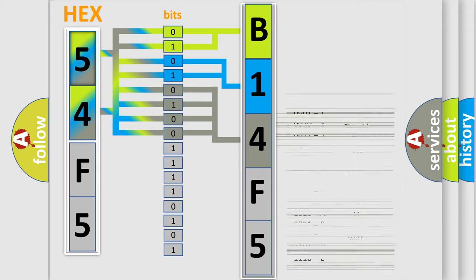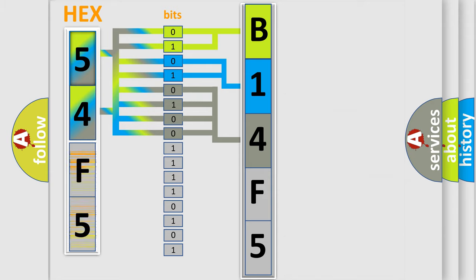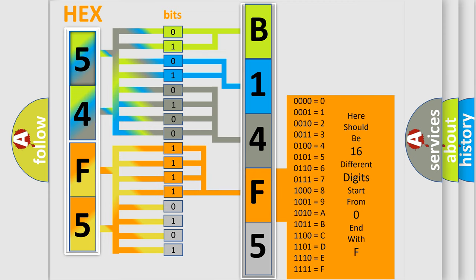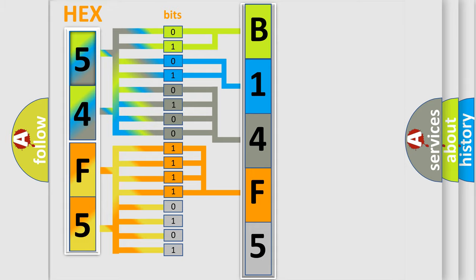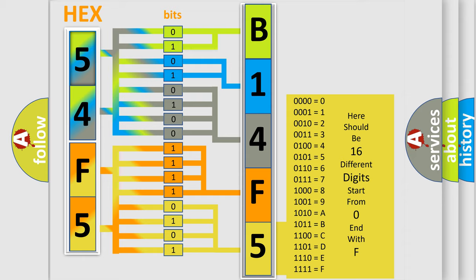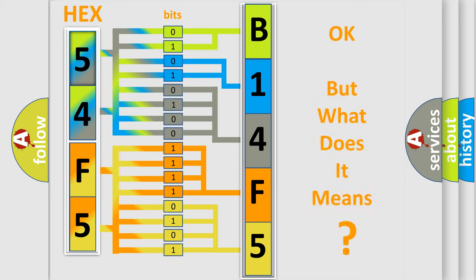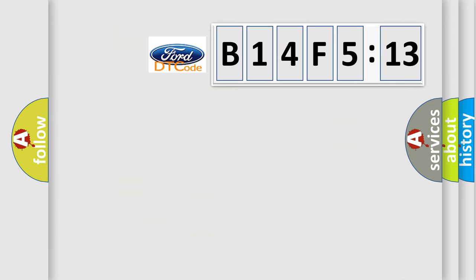The second byte is composed of a combination of eight bits. The first four bits determine the fourth character of the code, and the combination of the last four bits defines the fifth character. A single byte conceals 256 possible combinations. We now know in what way the diagnostic tool translates the received information into a more comprehensible format.